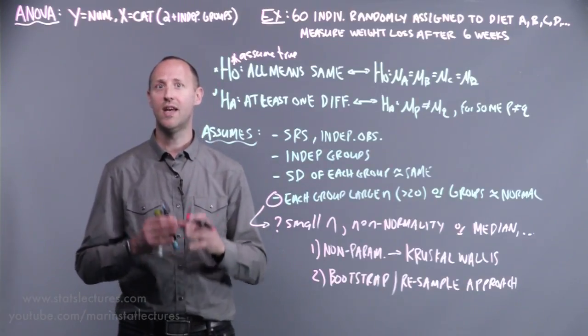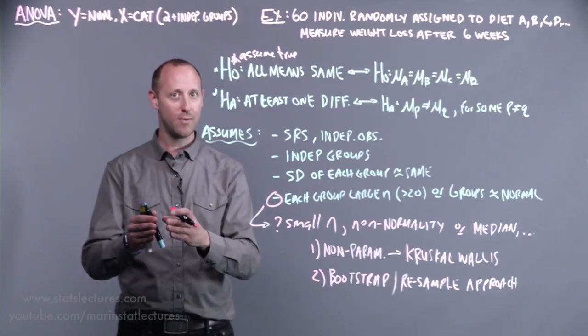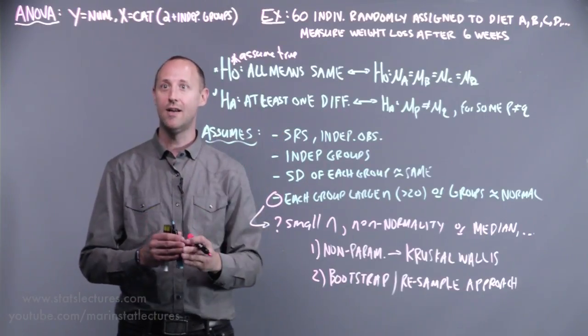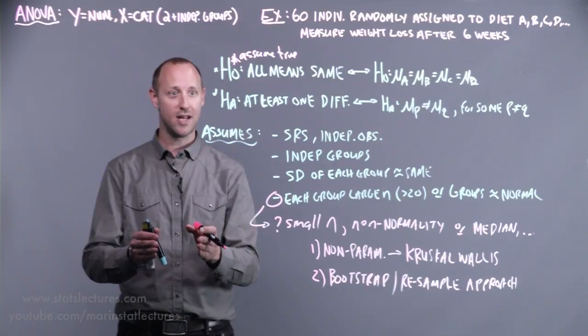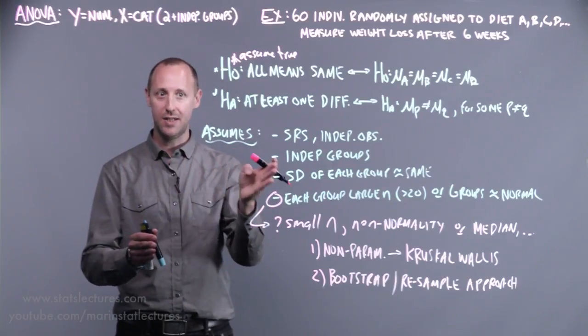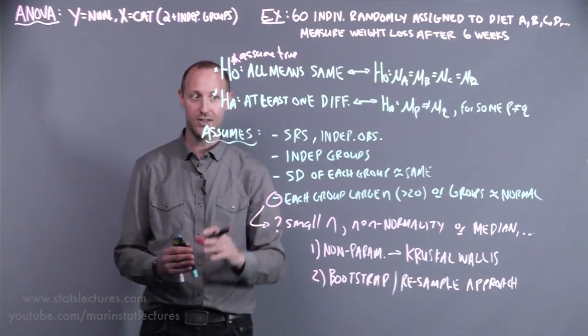We can do things like, in statistics, what gets called blocking, or sometimes it gets called stratified assignment. We can take all the heavier males and randomly assign equal numbers to group A, B, C, D, then all the lighter males randomly assign equal numbers to A, B, C, D, and so on. Trying to balance these important factors.